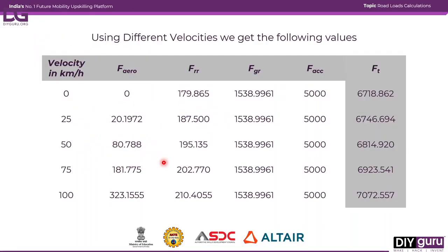The calculations shown were for 50 km/h. To get a broader picture, calculations have been done for 0, 25, 50, 75, and 100 km/h. From the table, aerodynamic drag increases with velocity squared, starting at zero. Rolling resistance also increases with velocity since the coefficient is velocity-dependent. Gradient resistance force is constant at 5° for all calculations. Acceleration force is also constant since acceleration is fixed at 2.777 m/s² throughout.